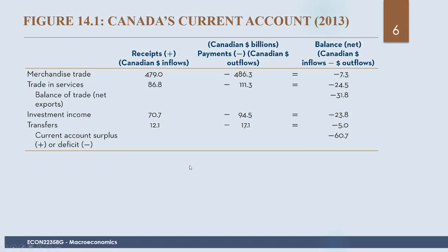Here is Canada's current account in 2013. In terms of merchandise trade, we had receipts of $479 billion and payments of $486.3 billion, giving an overall net of negative $7.2 billion — more monetary outflows than inflows.